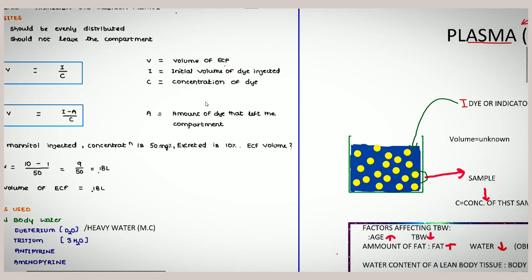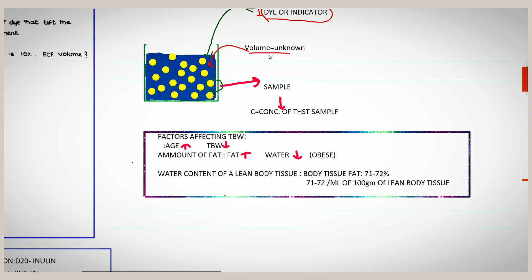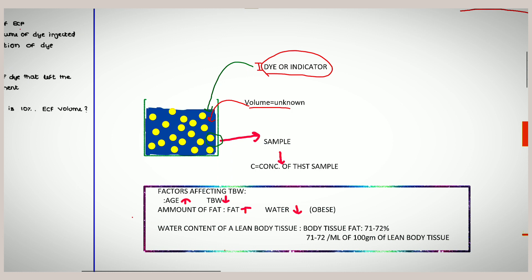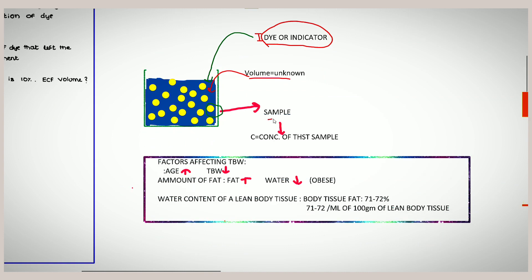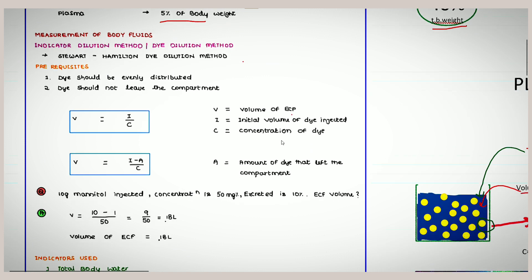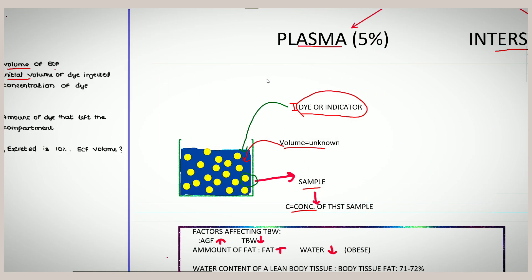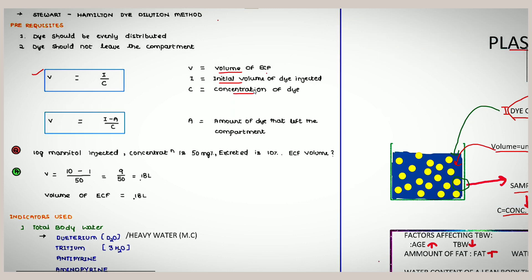Now let us look at how we measure body fluid. We take a beaker with an unknown volume and add a dye or indicator. We let the indicator dissolve and reach equilibrium, then derive a sample with concentration C. The formula to find volume is: V = I / C, where V is the volume of the compartment, I is the initial amount of dye injected, and C is the concentration of dye obtained.